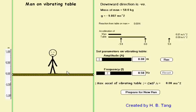A man is standing on a table which is going to be set into vibration. The amplitude and frequency of the vibration can be adjusted here. The computer will calculate the maximum acceleration of the table and display the value here.